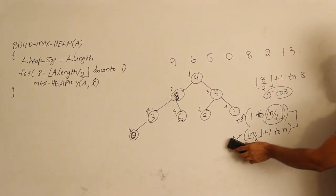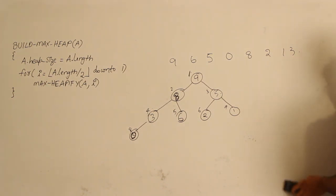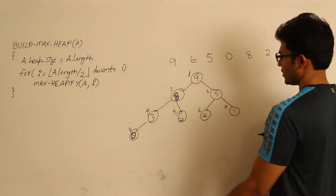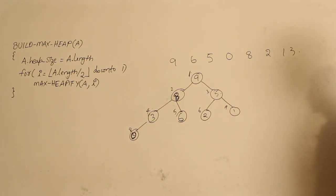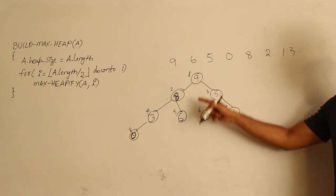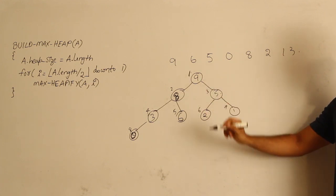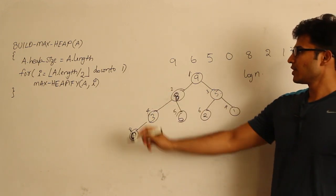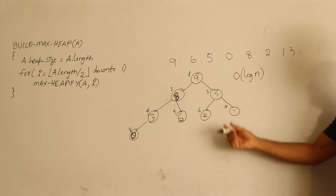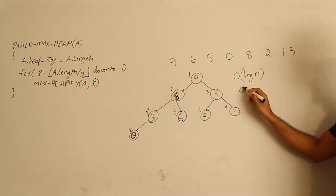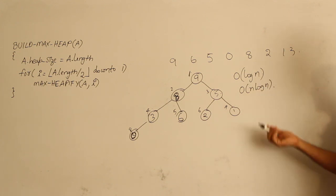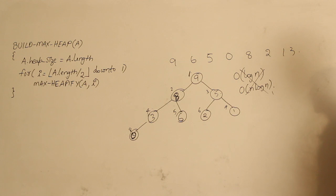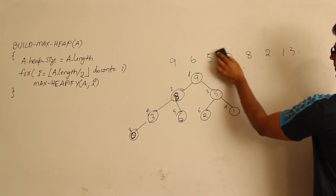Now the question is: what is the total time taken to finish this build max heap? You might think that since the tree is of height log n and max heapify takes O(log n), and we apply it nearly n times, the total time is O(n log n) — which is as good as sorting. But that is not the correct way to analyze it.